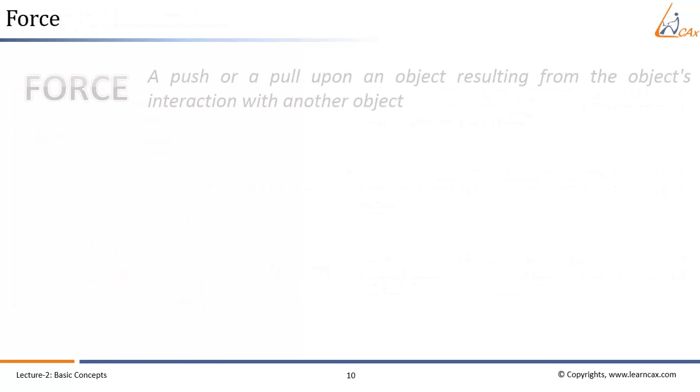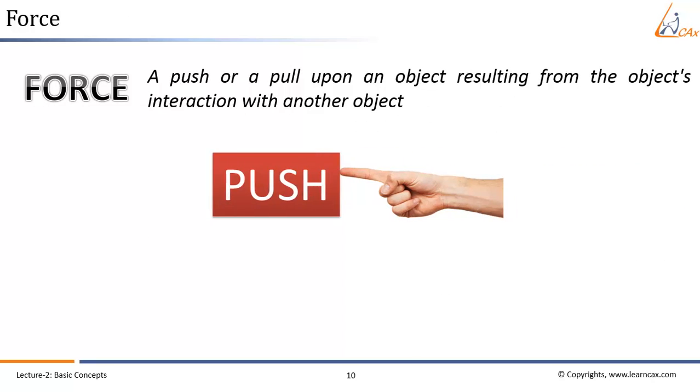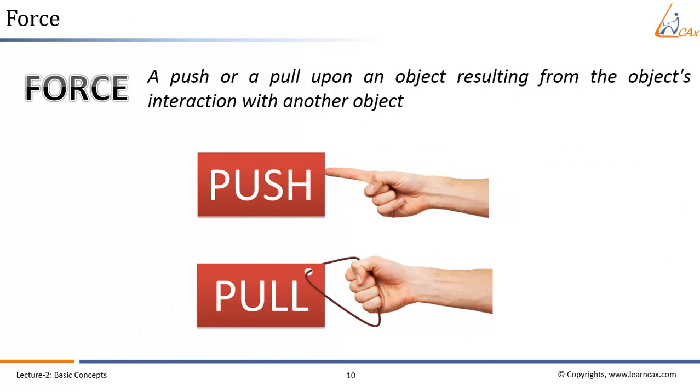A force is a push or pull upon an object due to the object's interaction with another object. Whenever there is an interaction between two objects, there is a force upon each of the objects. Forces only exist as a result of an interaction. And depending on the way the objects are interacting with each other, they can be broadly named in two categories.